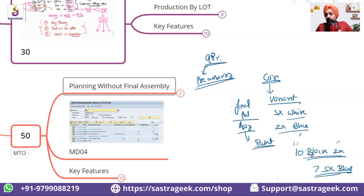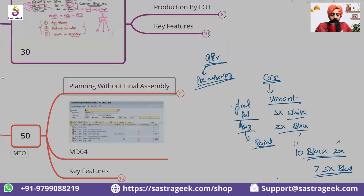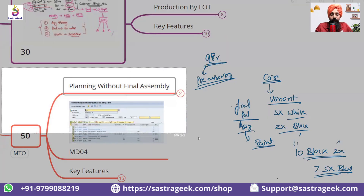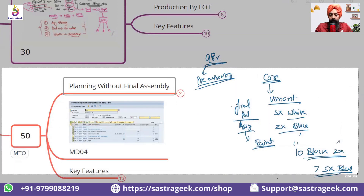All that common planning would be done based on the forecast, but the final production and final assembly would be done based on the sales order received. In that case, we use Strategy 50 — that is the use case for Strategy 50. Now we'll see how it actually works and how the MD04 screens will look for Strategy 50.